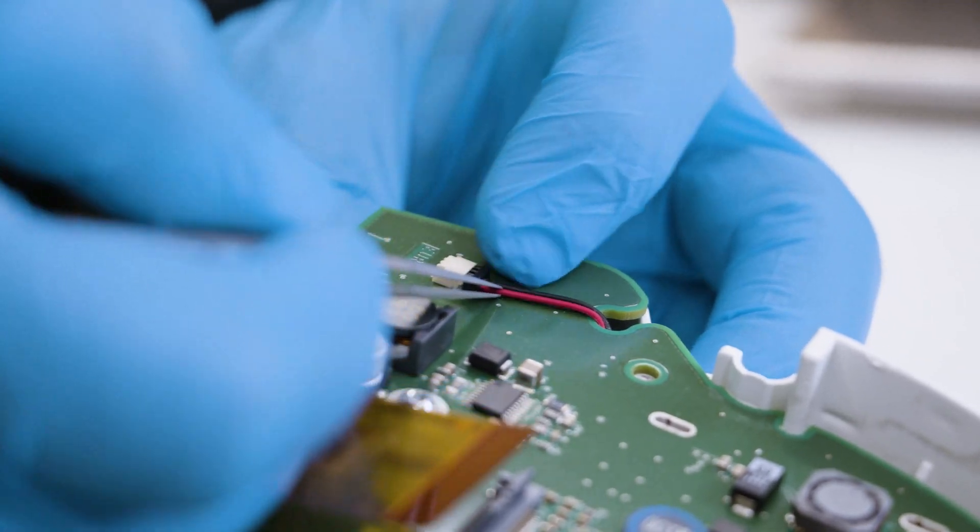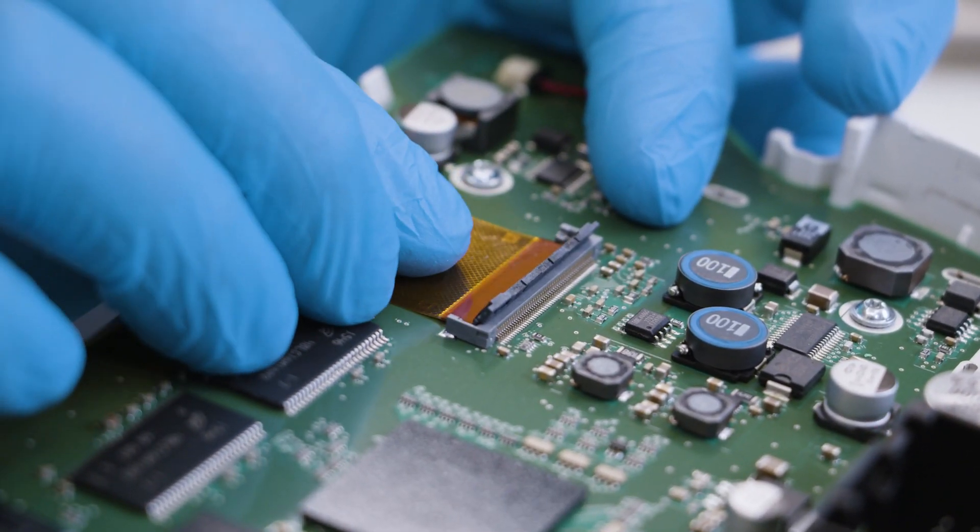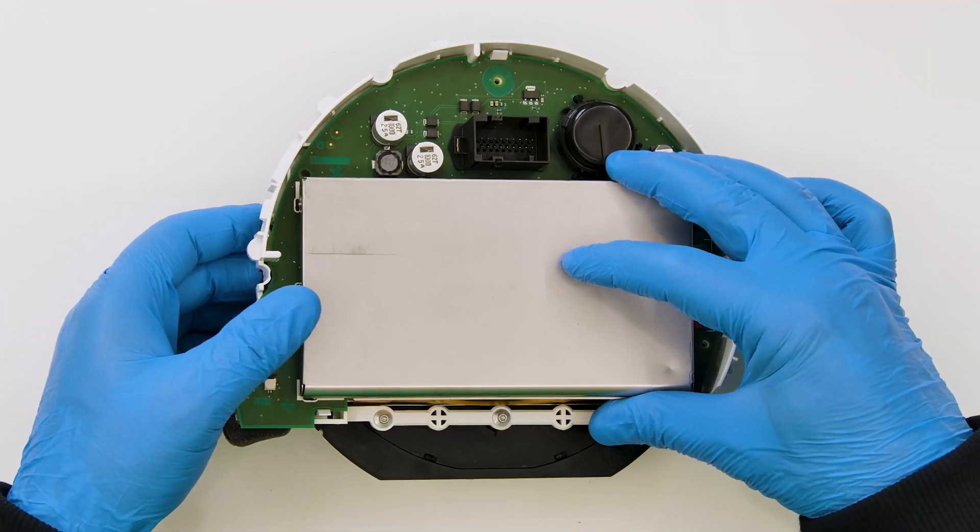Tighten the screws. Plug the connector and the FPC as they were originally. Put back the metal shielding.